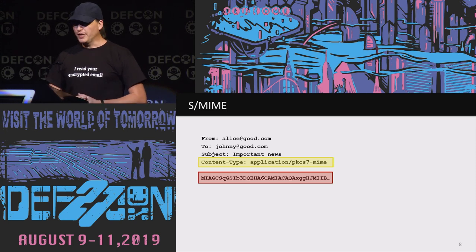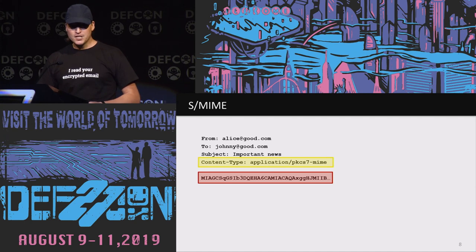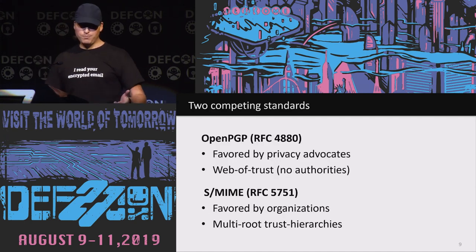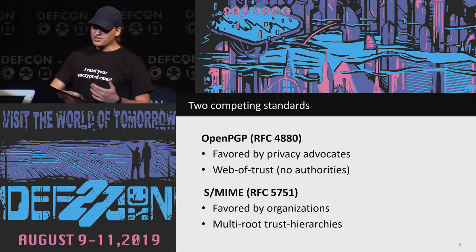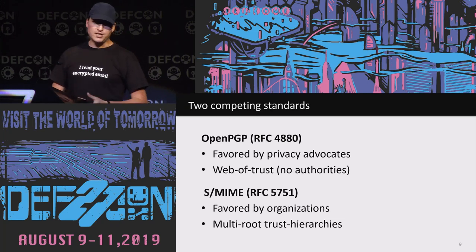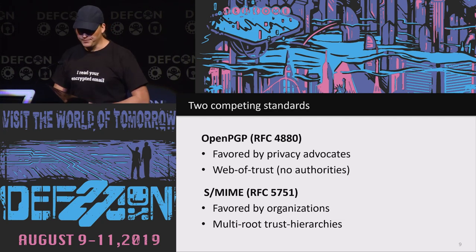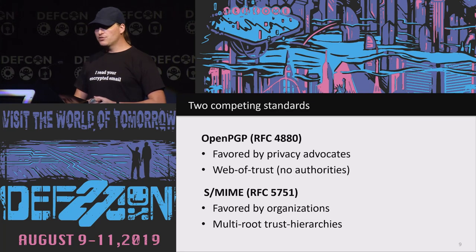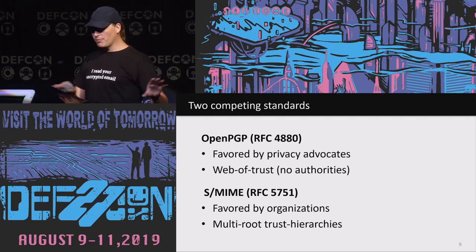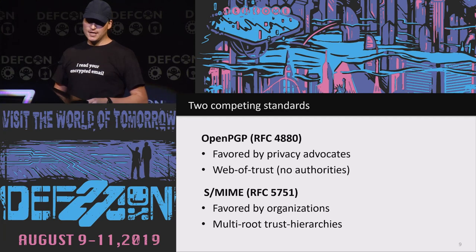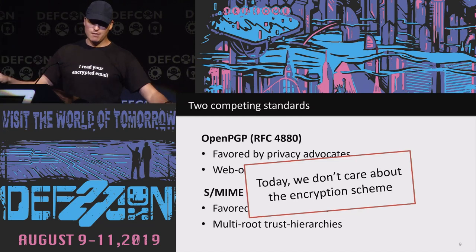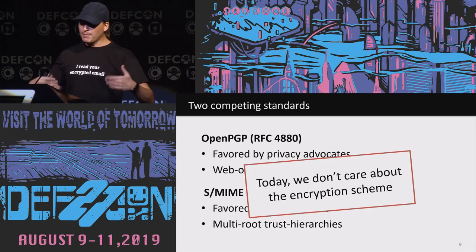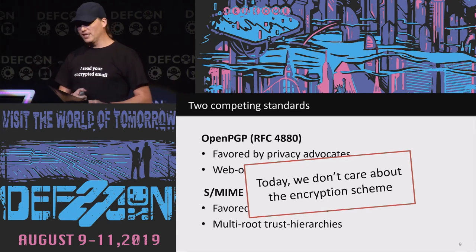How do you encrypt your emails in 2019? We still have two competing standards: PGP, more used by journalists, activists, and hackers, and S/MIME, more used in business environments or universities that can afford running a central certificate authority. Besides the trust model, both standards use more or less the same crypto — which is old crypto with a lot of flaws. But I'm not going to talk about crypto today, because the attacks I'm presenting are basically independent of the actual encryption scheme, whether PGP or S/MIME.